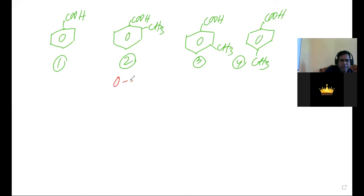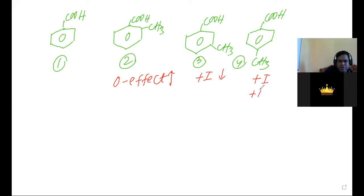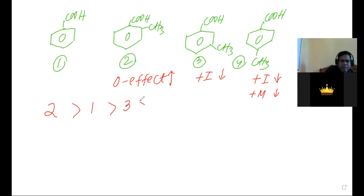For toluic acid: ortho effect at position 2 increases acidity. At meta, CH₃ is +I so it decreases acidity. At para, +I and hyperconjugation (plus hyperconjugation effect) also decrease acidity. So the order of acidic nature for toluic acid is: 2 (ortho) > 1 (benzoic acid) > 3 (meta) > 4 (para).